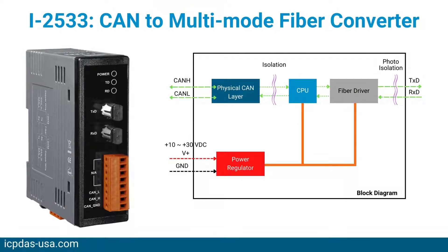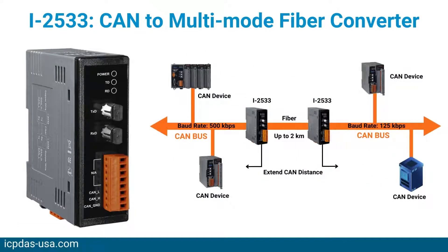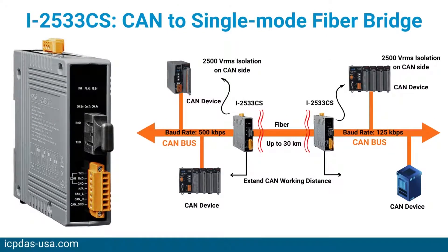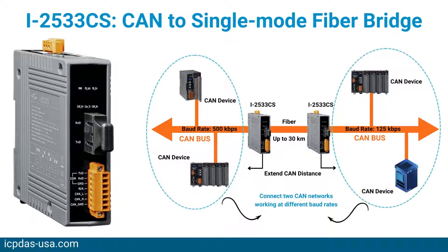The I-2533 is a local CAN bridge used to establish a connection between two CAN Bus systems via a fiber optic transmission medium. In order to solve the problem between a CAN and fiber transmission medium, it is specifically designed for converting the electrical CAN bus signal to fiber optic cables. The I-2533 CS is a CAN to single-mode fiber bridge. The transmission distance limitation of the CAN Bus system will not be affected due to different CAN Bus rates, and the total CAN Bus communication distance can be extended over fiber optic cables.